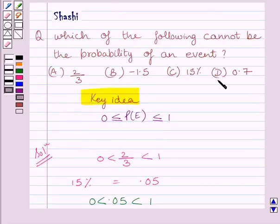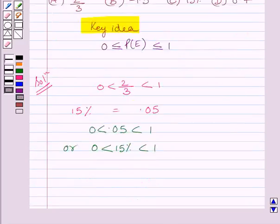Now, let us consider D part that is 0.7. Clearly, we can see 0.7 is greater than 0 and less than 1. So, it satisfies this condition given in the key idea. So, it can be probability of an event.